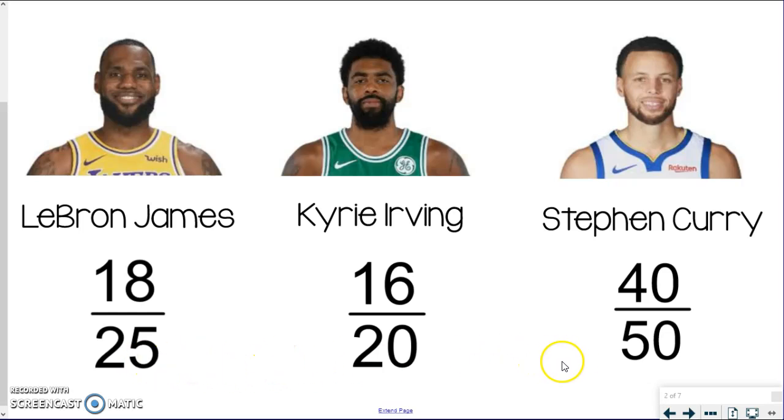So those are just the totals, and the top number is how many did they actually make. So the problem at this moment is we cannot accurately compare their free throw percentages or their ratios because they're not being compared with the same denominator. They took a different amount of shots. So yeah, Steph Curry had 40, but he also took a lot more free throw shots than the other two. And same thing, LeBron has 18 compared to Kyrie only having 16, but LeBron took more shots than Kyrie did. So you can't compare them as is. So I'm going to show you how we can accurately compare whose free throw shot percentage is the best. Because right now it's not in a percentage form.